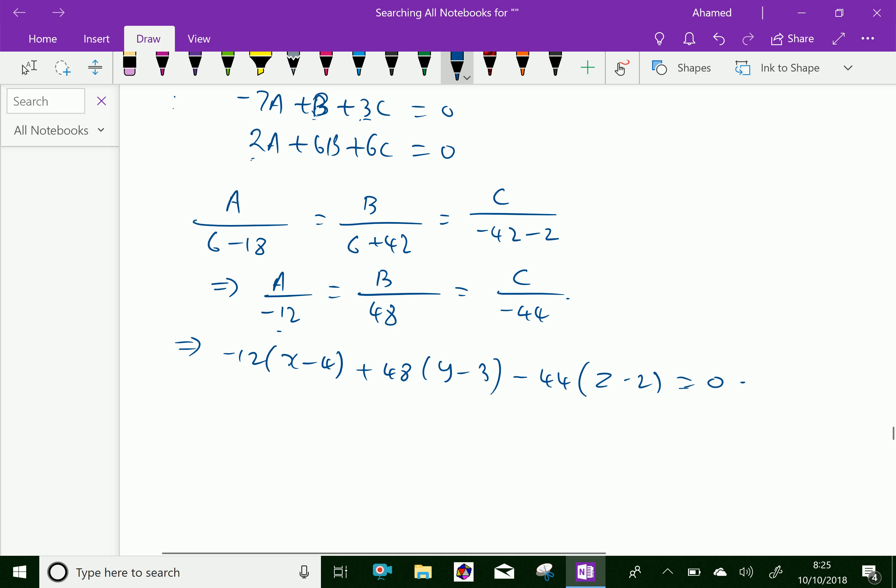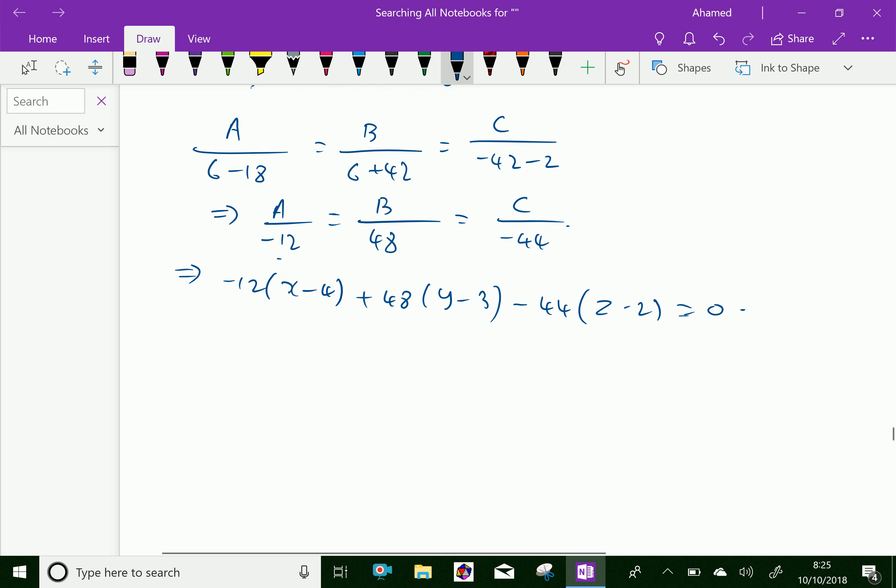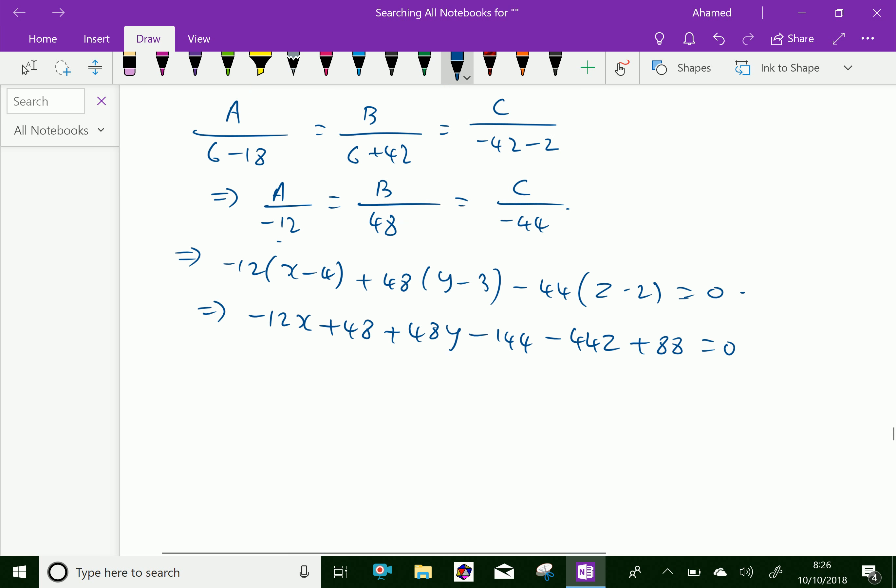Then by simplifying we get -12x + 48 + 48y - 144 - 44z + 88 = 0.